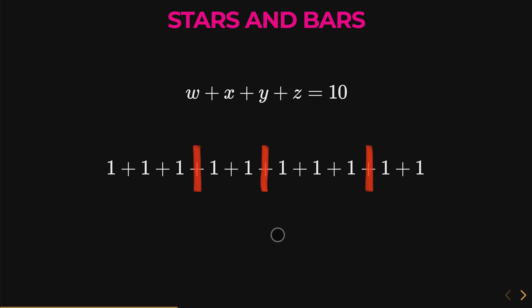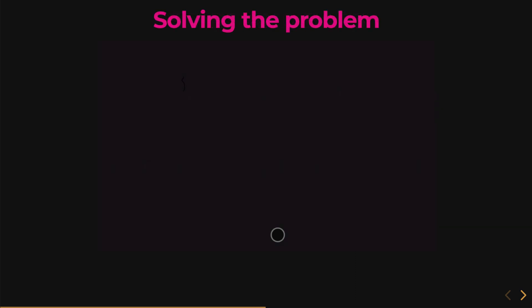So, let's actually solve this problem now, now that we know what to do. Just to remember, we have ten ones. And you can think of these as stars if you like, or objects if it makes it easier to think about. And again, we have four variables, so we have three bars. These three bars will split our ones into four groups for our four variables. Ten ones and three bars, that equals to a total of thirteen items.